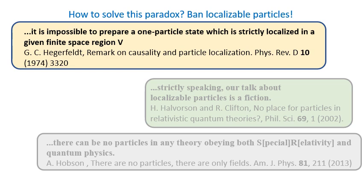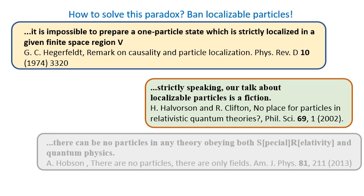This paradox has been discussed in many articles, and the consensus is that there is only one way to fix this problem: accept that there can be no localizable particles in nature. Hegerfeld wrote: It is impossible to prepare a one particle state which is strictly localized in a given finite space region V.